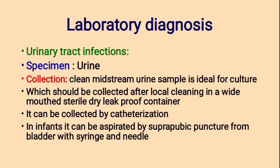Laboratory Diagnosis — Urinary Tract Infection. Specimen: urine. Collection: clean midstream urine sample is ideal for culture, collected after local cleaning in a wide-mouthed, sterile, dry, leak-proof container. It can also be collected by catheterization. In infants it can be aspirated by suprapubic puncture from the bladder with syringe and needle.